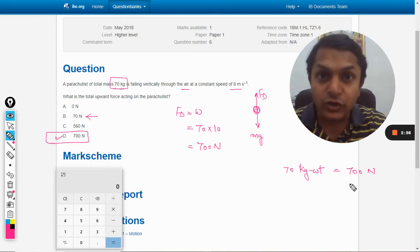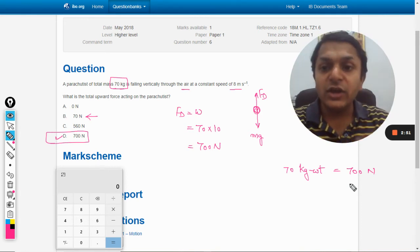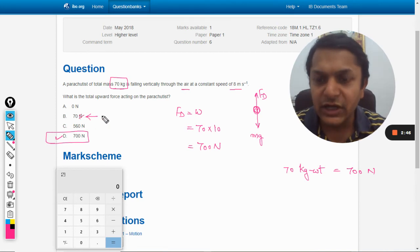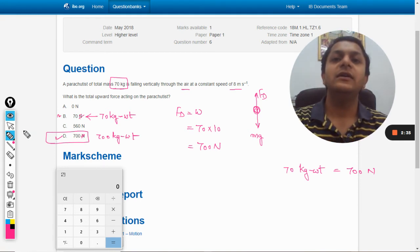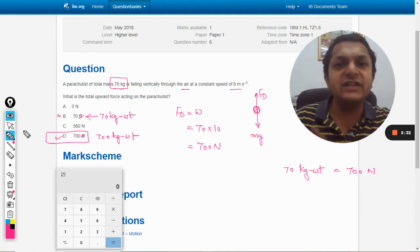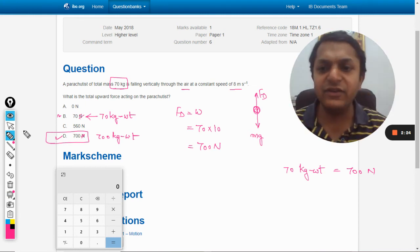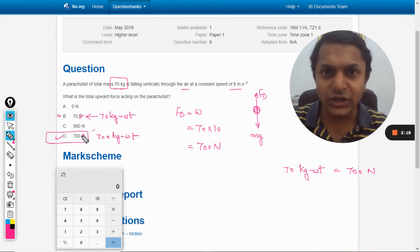70 kg-weight is the force that is equal to the weight of 70 kg. So if in your question, be very careful, if instead of Newton it was 70 kg-weight and instead of this Newton it was 700 kg-weight, the answer will be B because the unit is kg-weight. But if we change the unit, we have to be very particular about which units are being used. If the unit is Newton, your answer is definitely 700 Newton. Answer is D. All the best, bye.